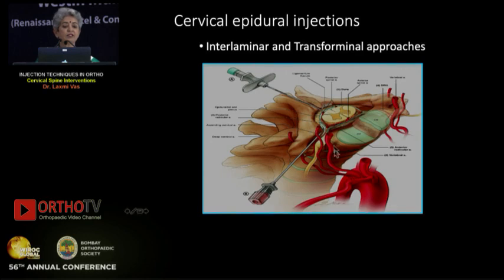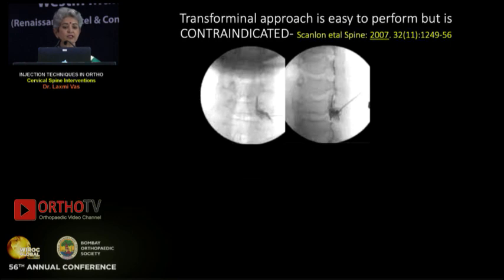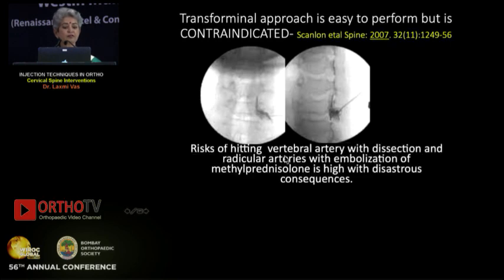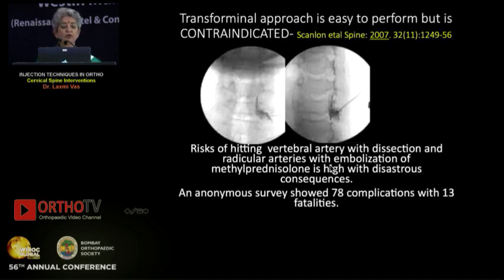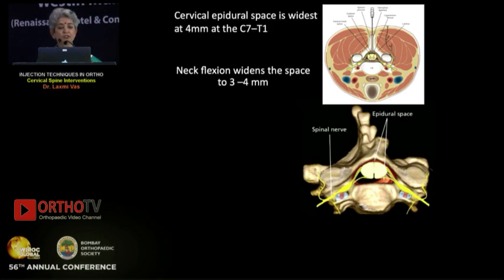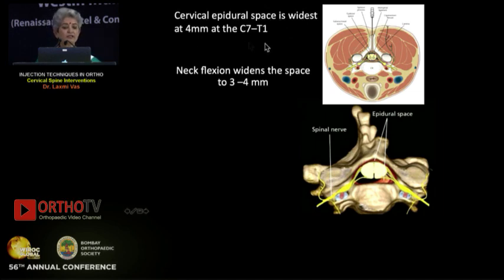Cervical epidural injections can be interlaminar or transforaminal. Transforaminal is contraindicated because of the risks of hitting vertebral arteries high up, with dissection, and radicular arteries can be hit with embolization of particulate steroid. One anonymous survey showed 13 fatalities and 78 complications — that is enough to contraindicate this procedure. The cervical epidural space is widest at 4 mm at C7-T1.